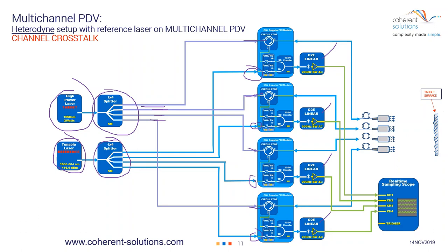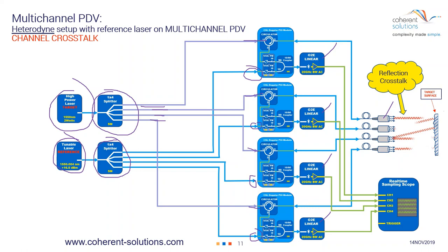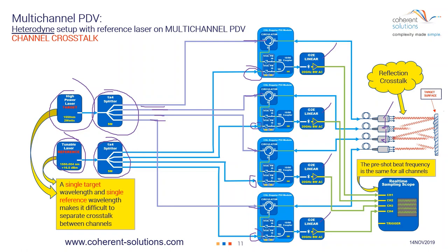One of the problems with this setup is that if there's any crosstalk between channels at the probes, there's nothing that prevents it from coupling into neighboring channels below. When you only have two separate wavelengths — the target and the reference — you can't tell the difference when channel 1 is talking to channel 4, or channel 2 to channel 3. This is one of the disadvantages of splitting a high-power laser and splitting the reference laser — there's no way to prevent the crosstalk from bleeding into adjacent channels.